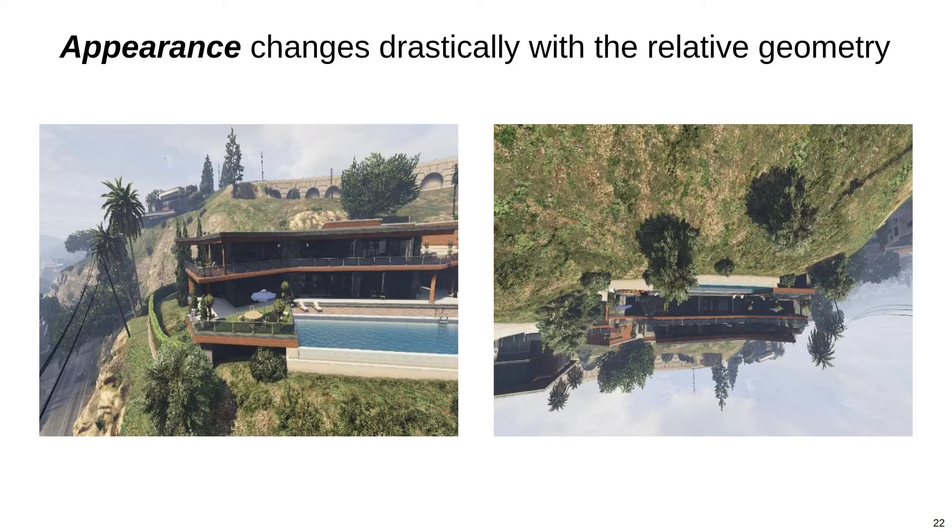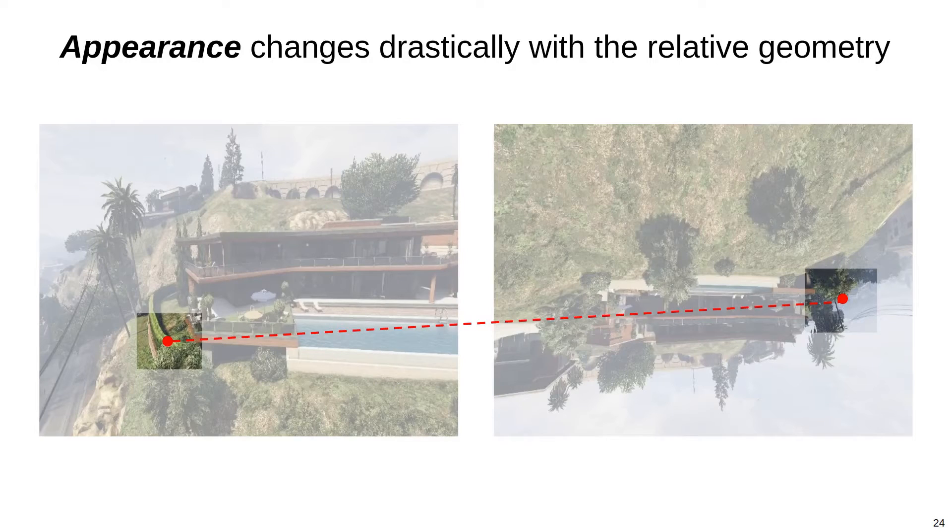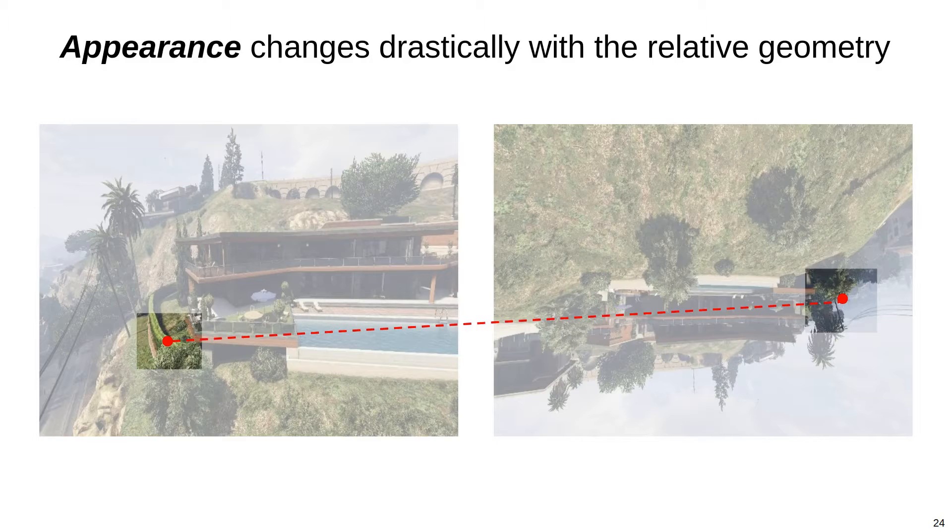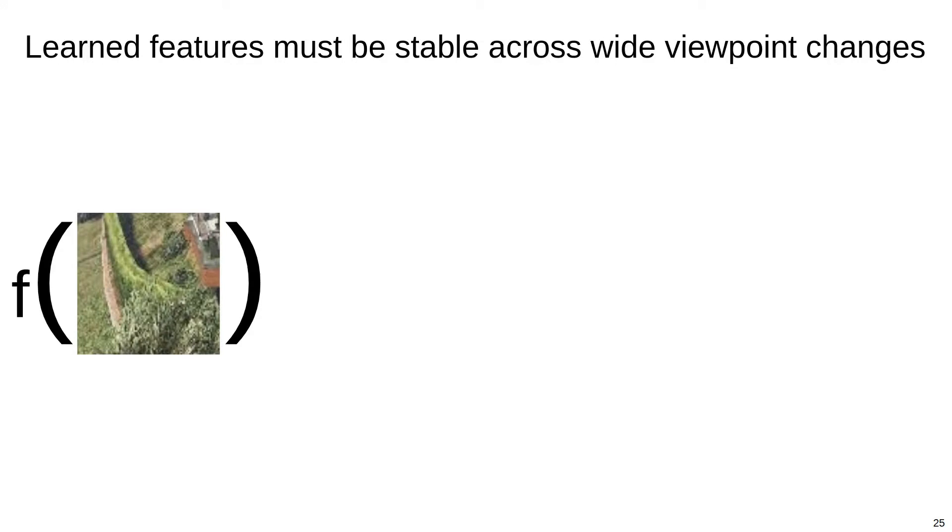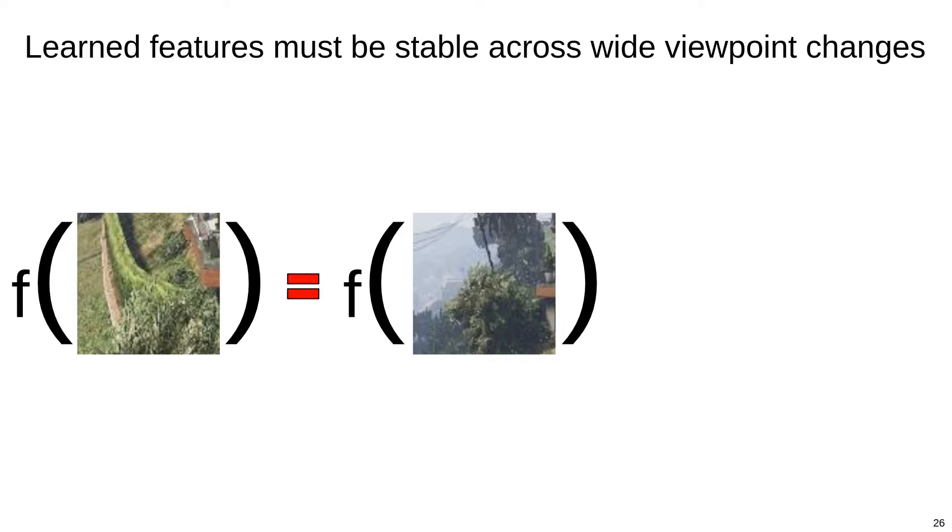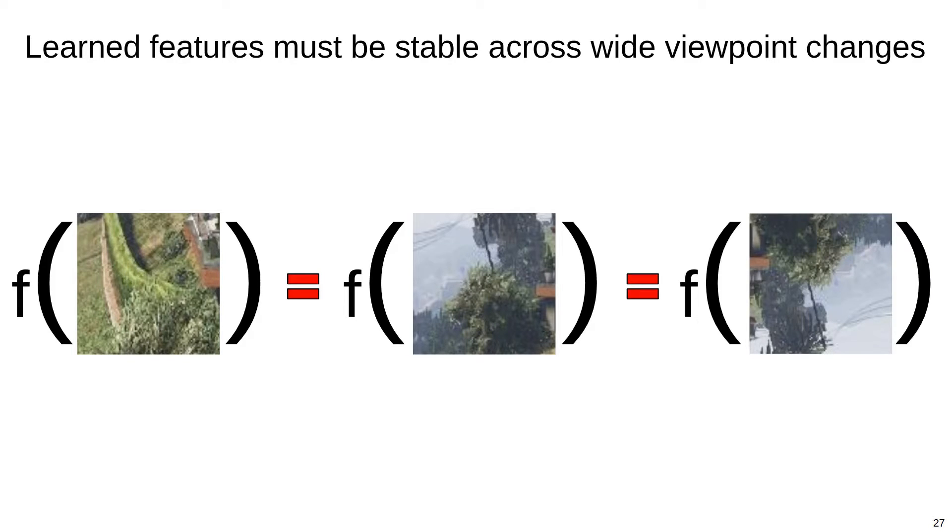This association task becomes even harder if the cameras are rotated relative to each other. Here is the same pixel association as before. The local patches are now even more different. By not considering the relative geometry between the cameras, the extracted features must implicitly compensate for all possible arrangements of the cameras. The features for the first patch of pixels must be the same as for the second patch, which must be the same as the last patch.